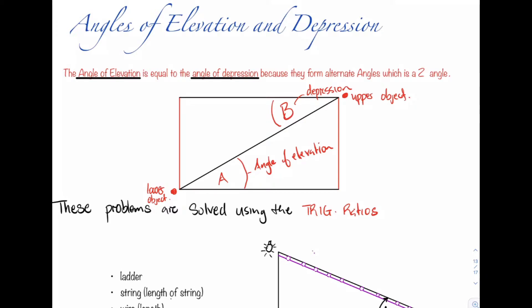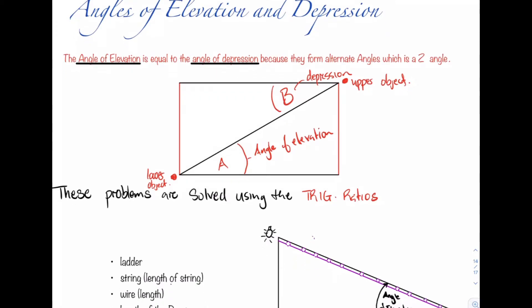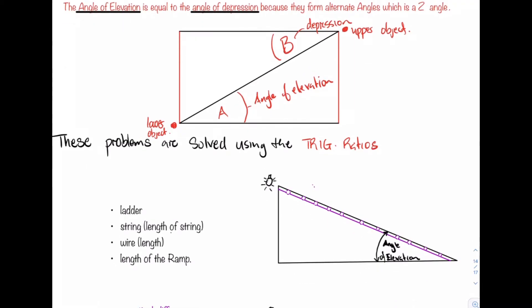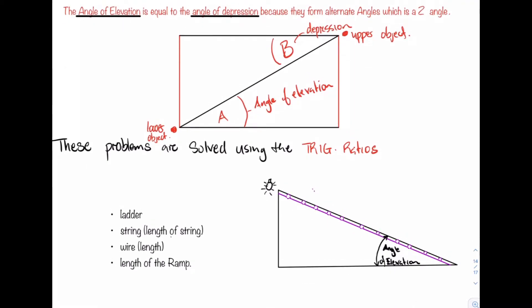Here I've listed out some of the common terms we need to know in order to make these questions easier to deal with. Terms like ladder, string, length of string, length of wire, or length of ramp — notice that all of these terms are related to the hypotenuse.